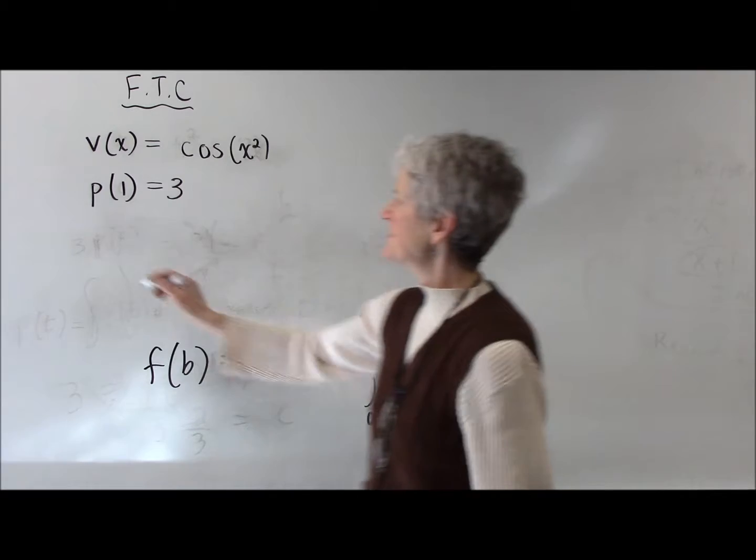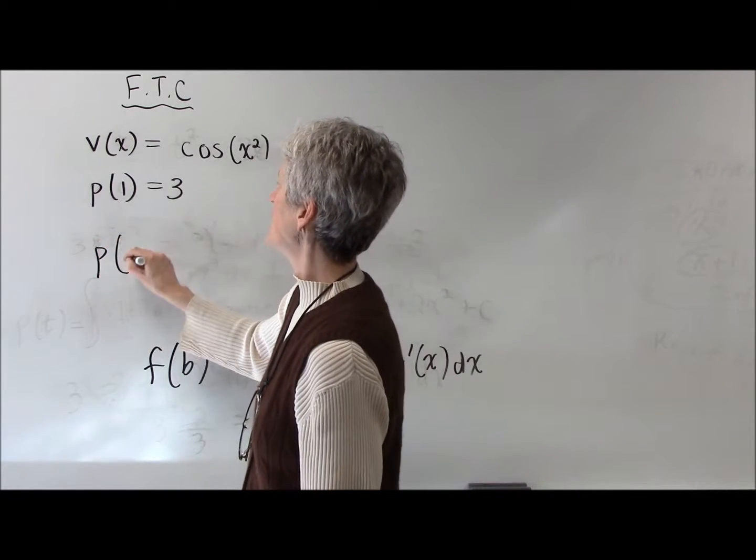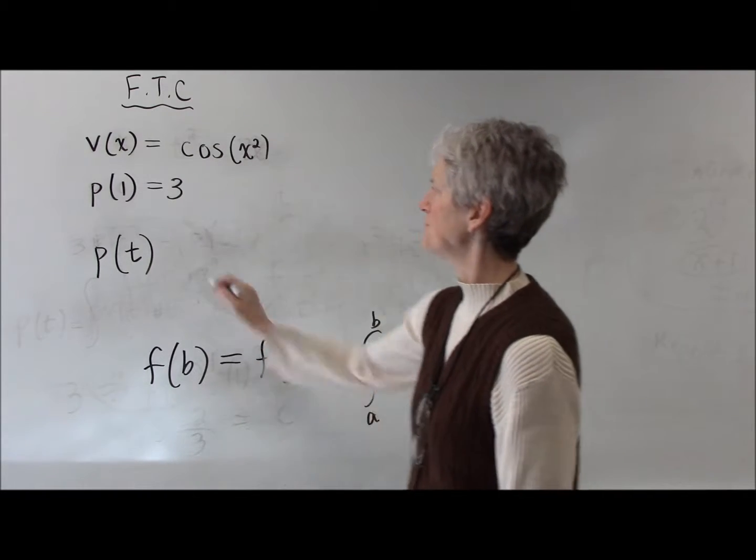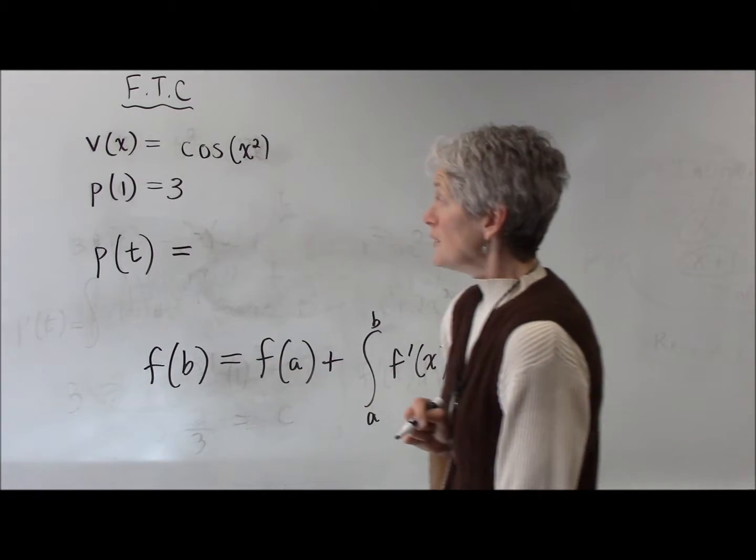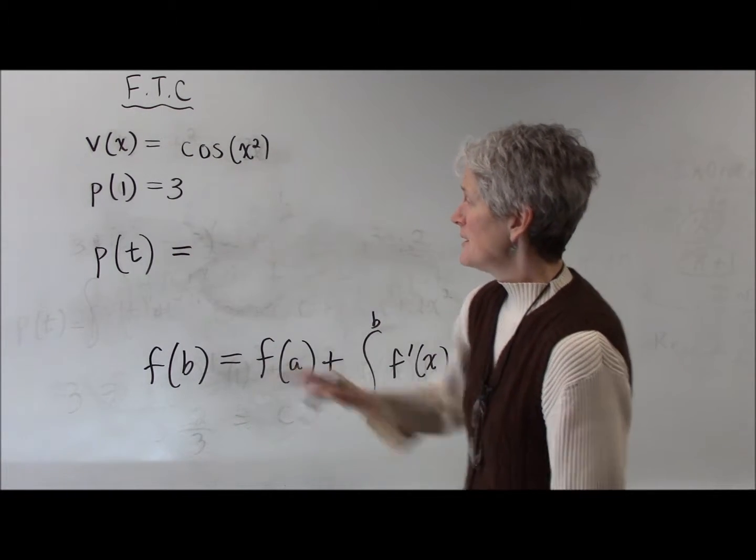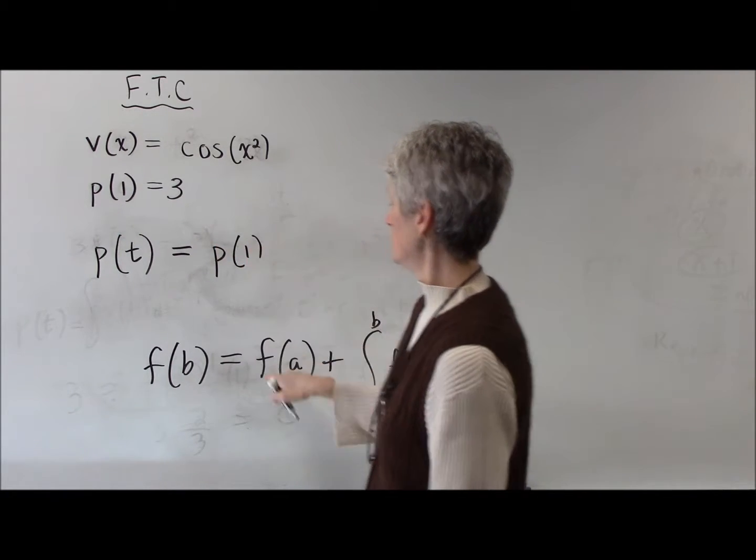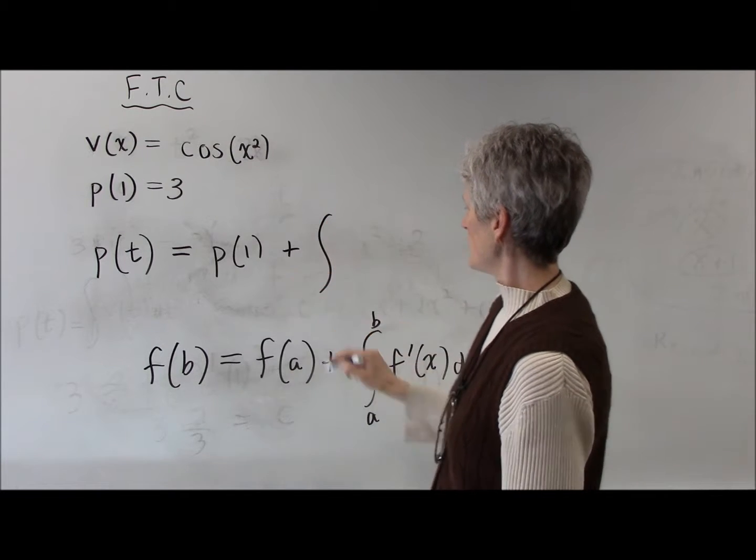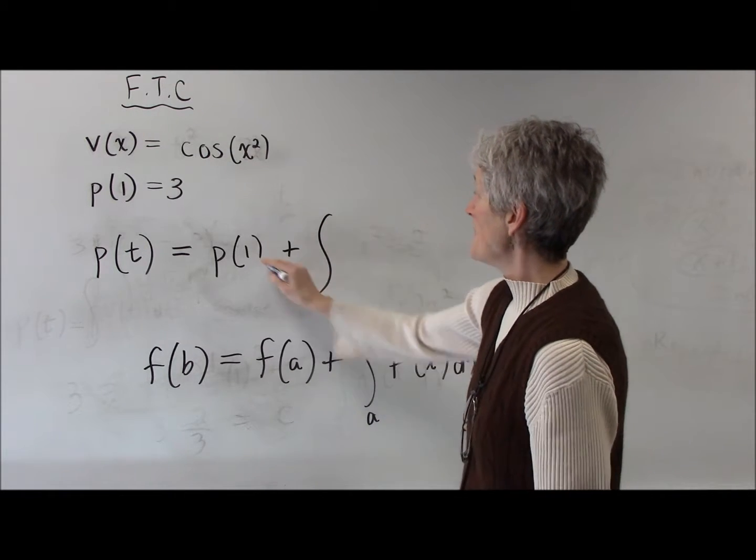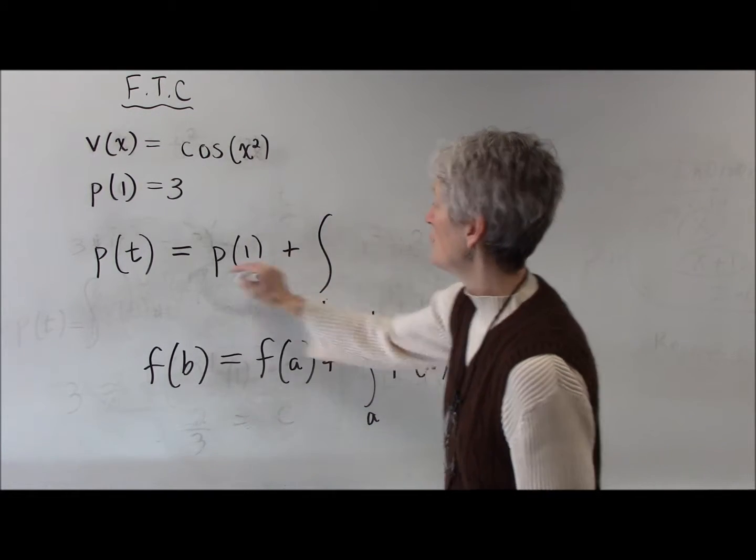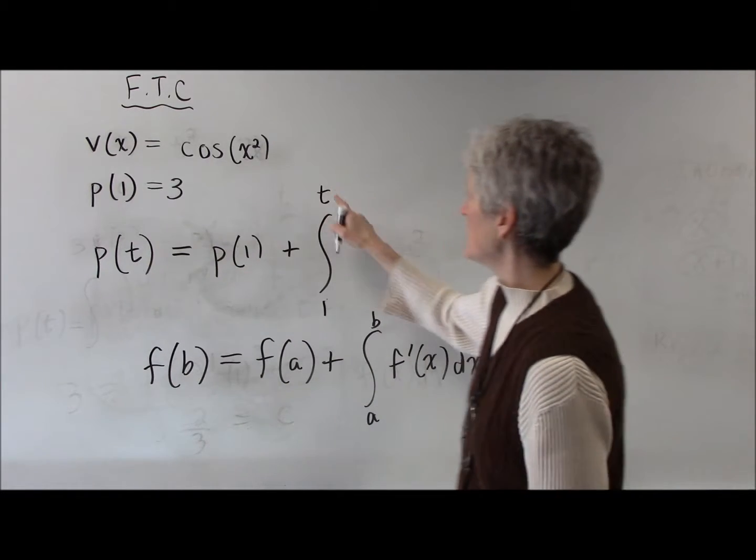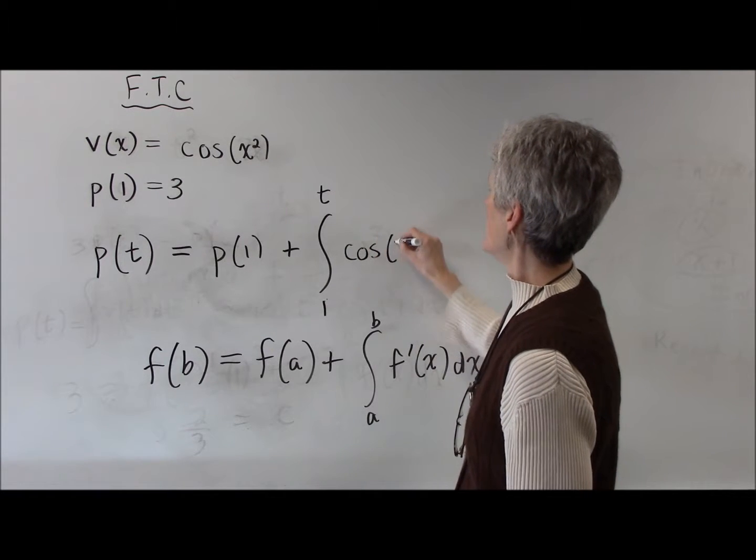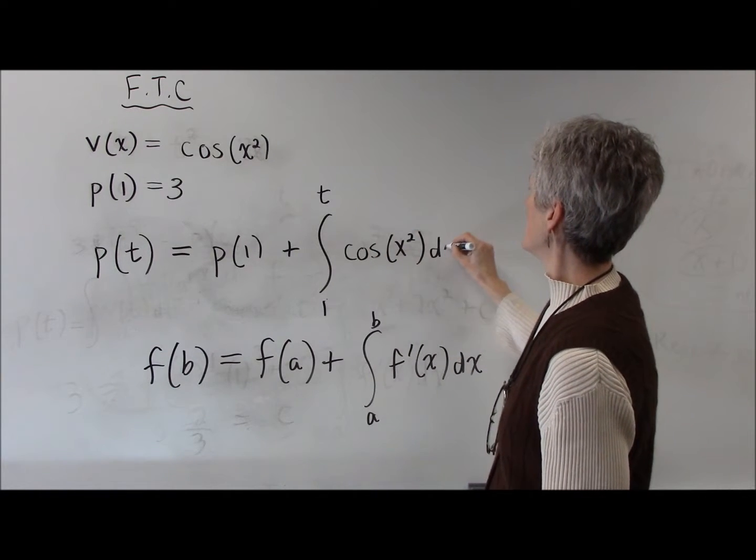So let's say I want to find p of t. I'll just give it a new variable there. So I'm going to start at p of 1, because that I know, plus the antiderivative, or the integral, from 1 to t, because that's where I'm ending,